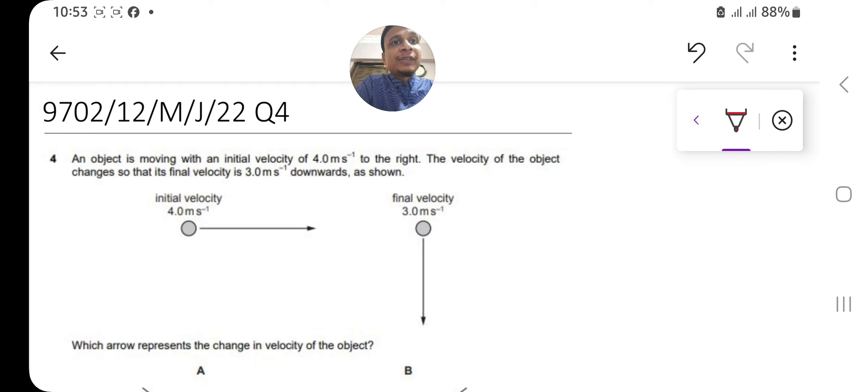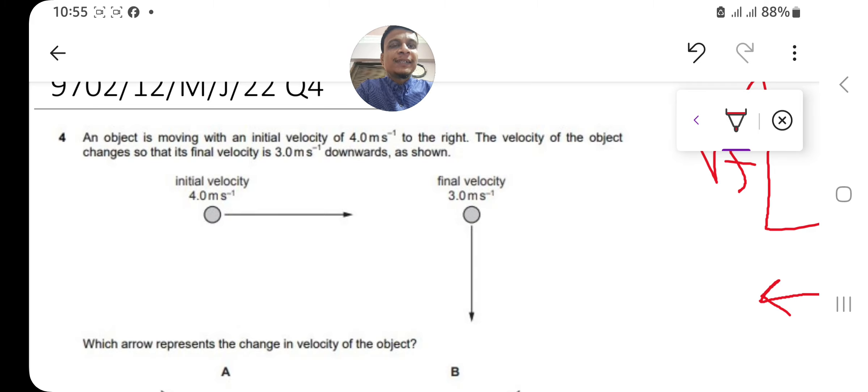But right now they are asking only for the direction. This is May-June 2022, Question 4, Variant 1-2. They are saying that the initial velocity of the object moving to the right is 4 m/s, and the velocity of the object